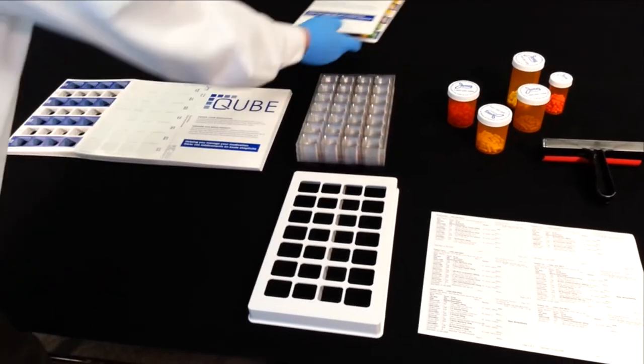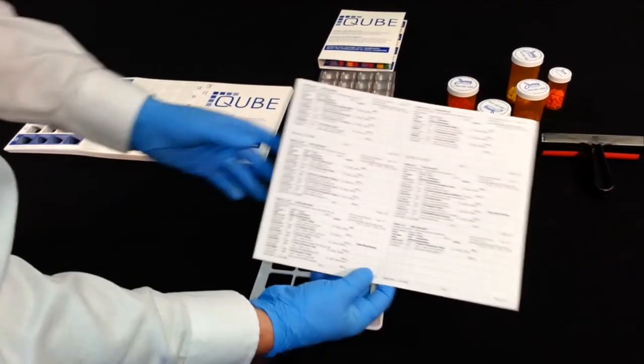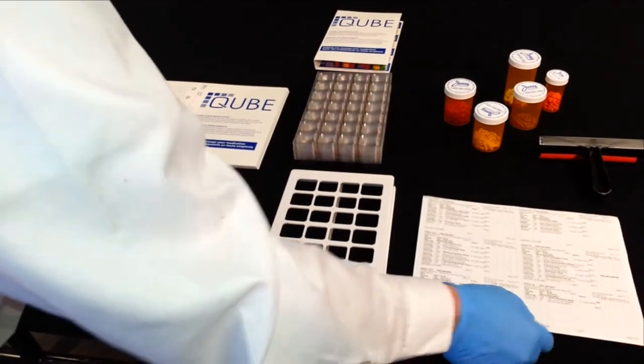Once all patient and medication information is entered into your pharmacy's computer system, the medication summary label will be printed. You will use the summary label to help you fill the patient's CUBE compliance card.